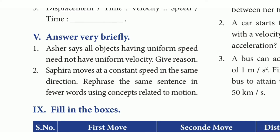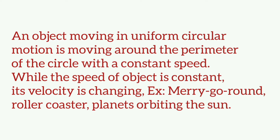Short answer, first question: An object having uniform speed need not have uniform velocity — give reason. Answer: An object moving in uniform circular motion moves around the perimeter of the circle with a constant speed, but its velocity is changing. Examples: merry-go-round, roller coaster, planets orbiting the sun.